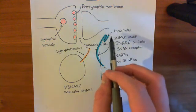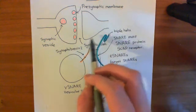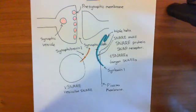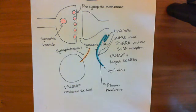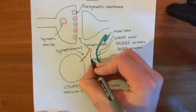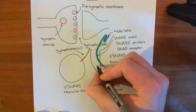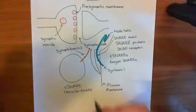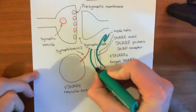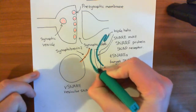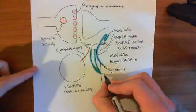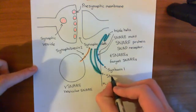The final T-SNARE is a protein known as SNAP25, which supplies two alpha helices into the core SNARE complex. Here are the two alpha helices of SNAP25, and at the base it has a membrane attachment portion. So this here is SNAP25.